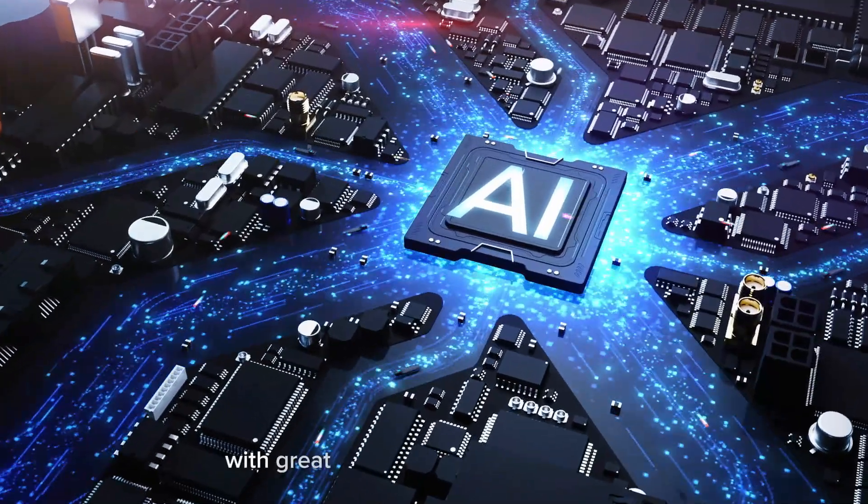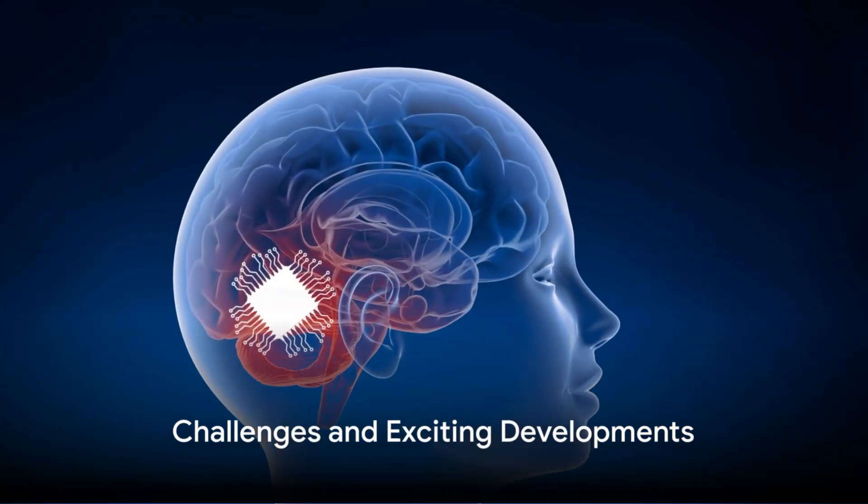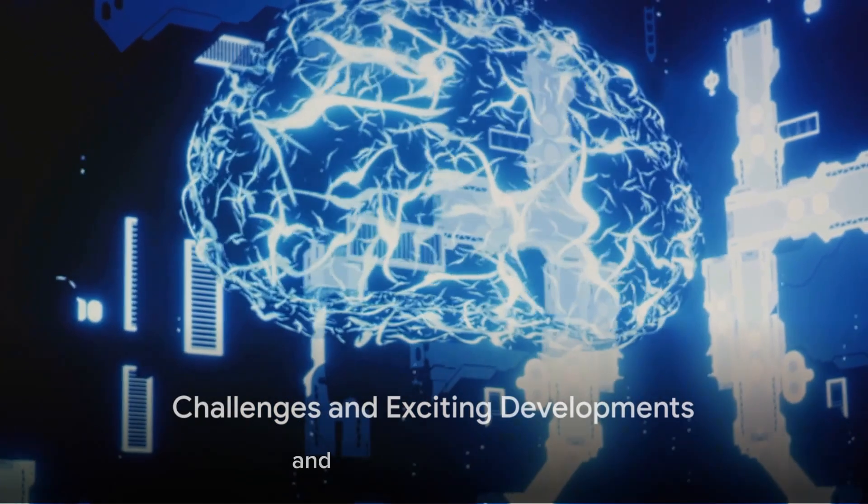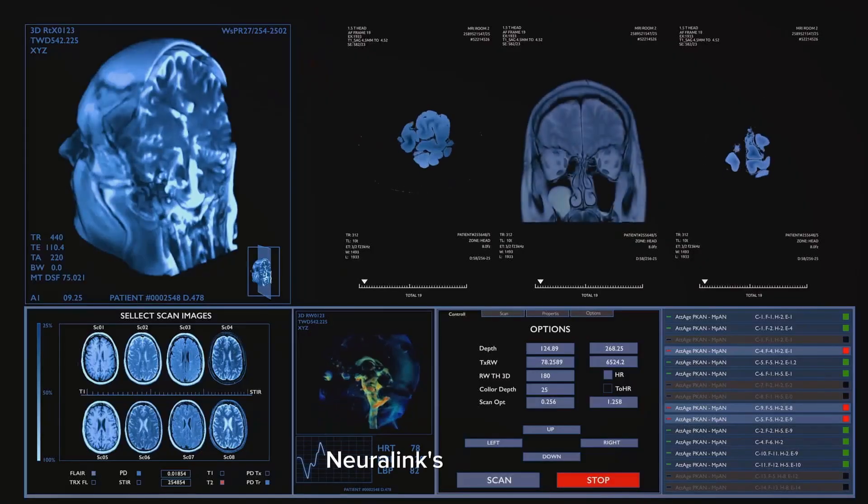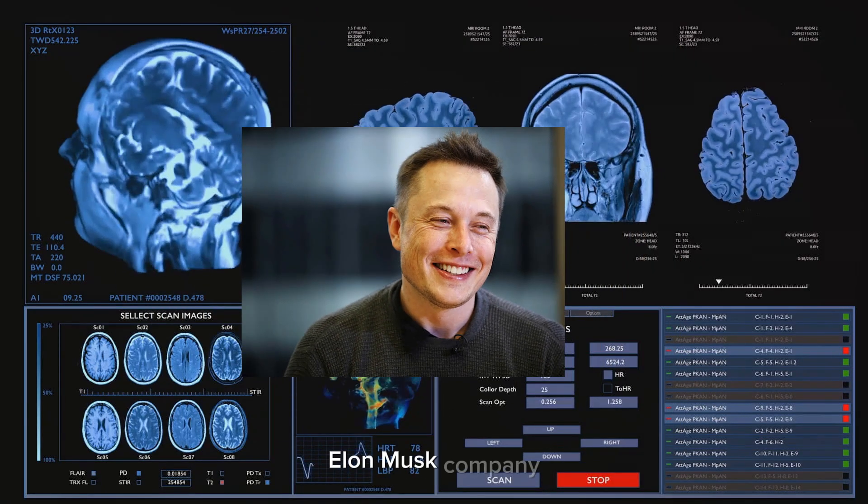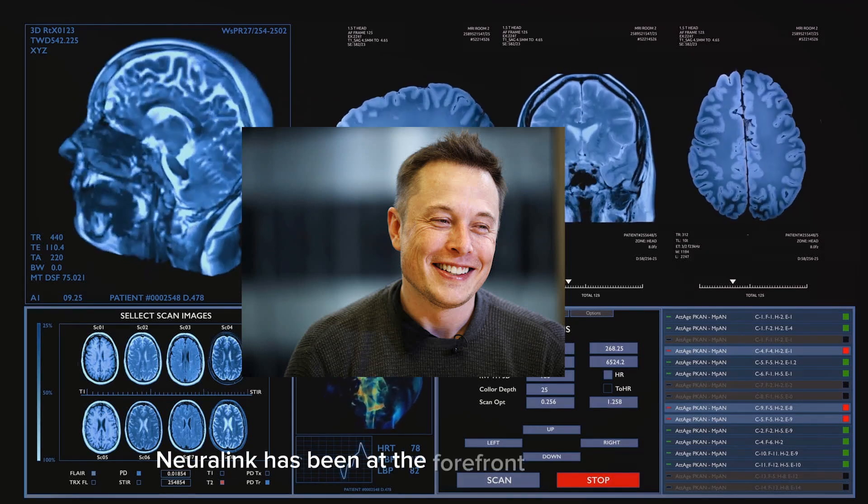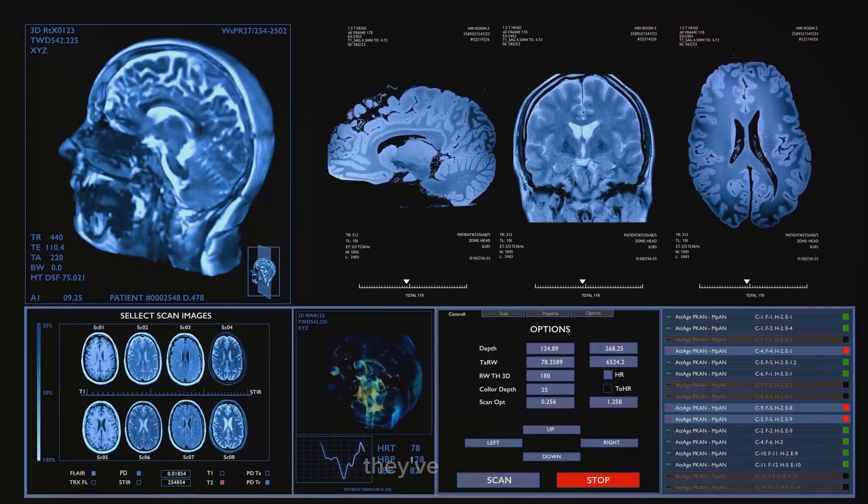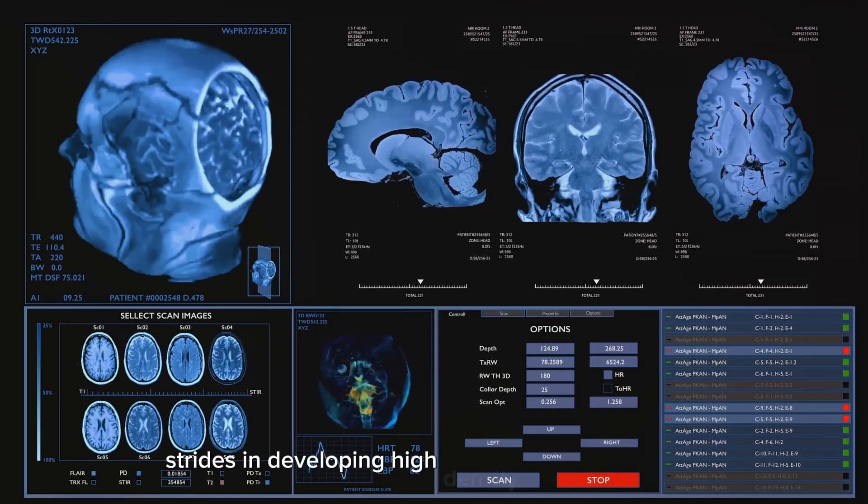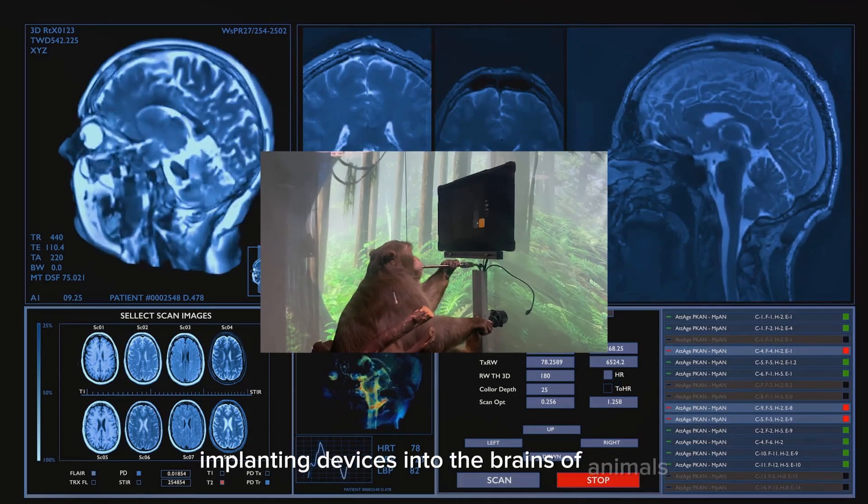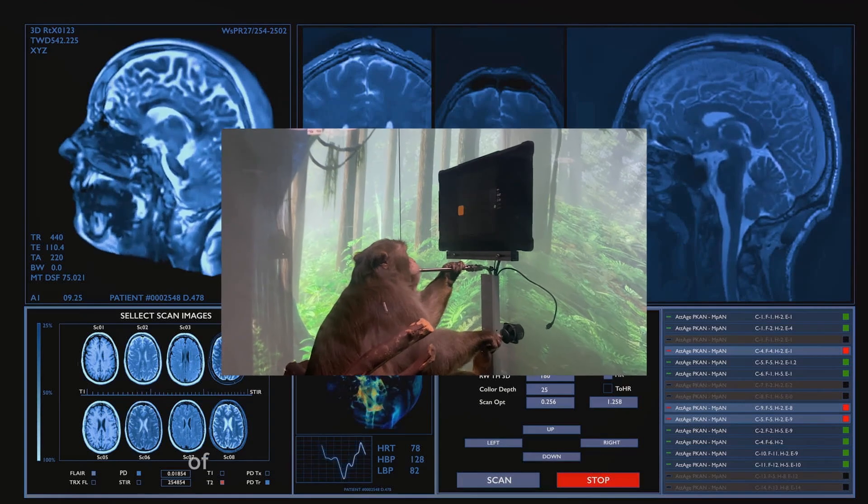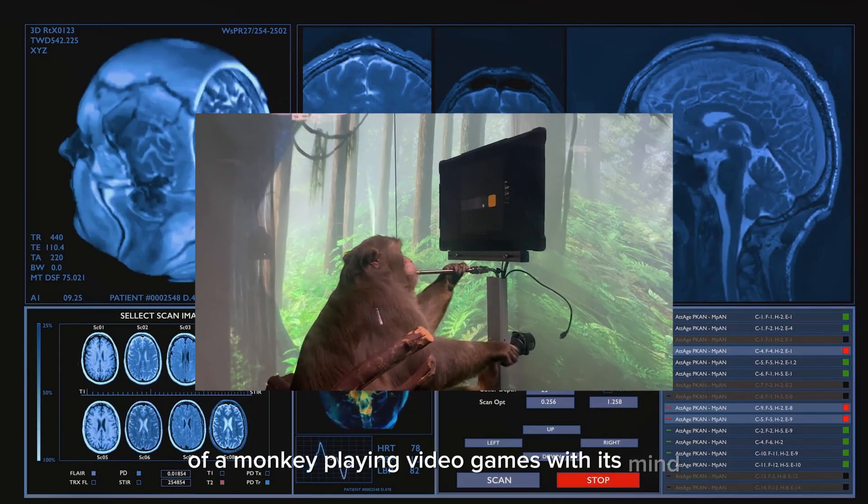But of course, with great innovation comes challenges. Let's explore some of the hurdles and exciting developments in the world of mind-controlled automation. Neuralink's progress. Elon Musk's company, Neuralink, has been at the forefront of BCI innovation. They've made strides in developing high-density neural interfaces, implanting devices into the brains of animals, and showcasing a real-time demonstration of a monkey playing video games with its mind.